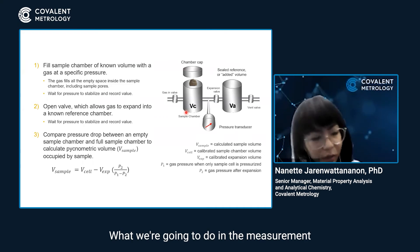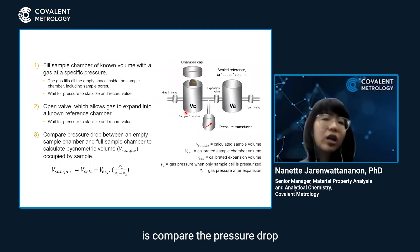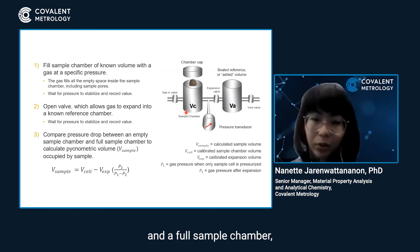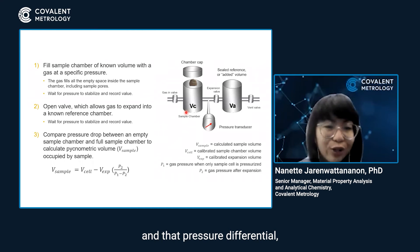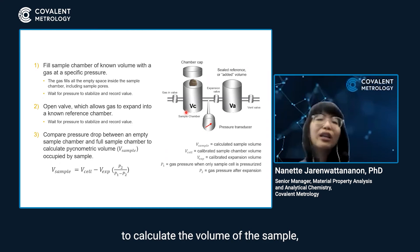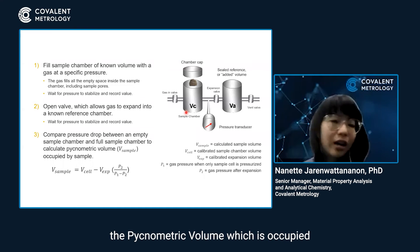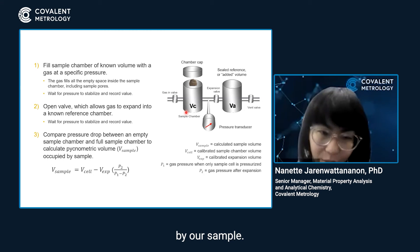What we do in the measurement is compare the pressure drop between an empty sample chamber and a full sample chamber. That pressure differential allows us to calculate the pycnometric volume occupied by our sample.